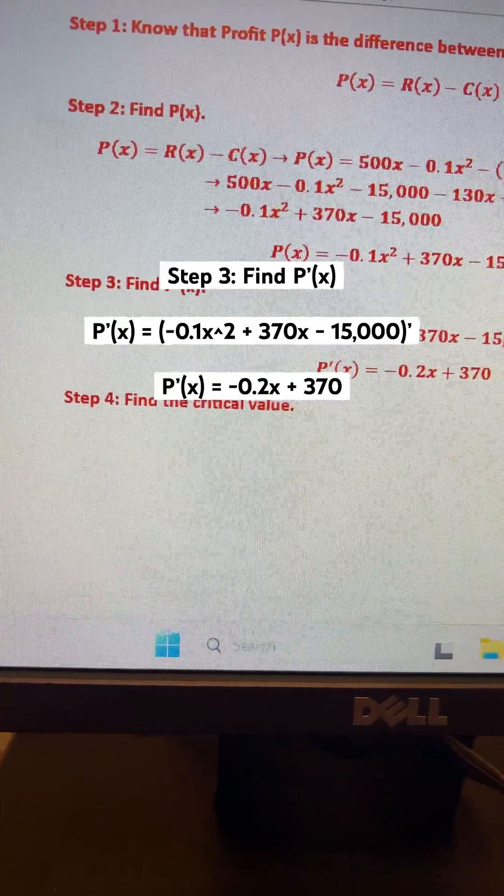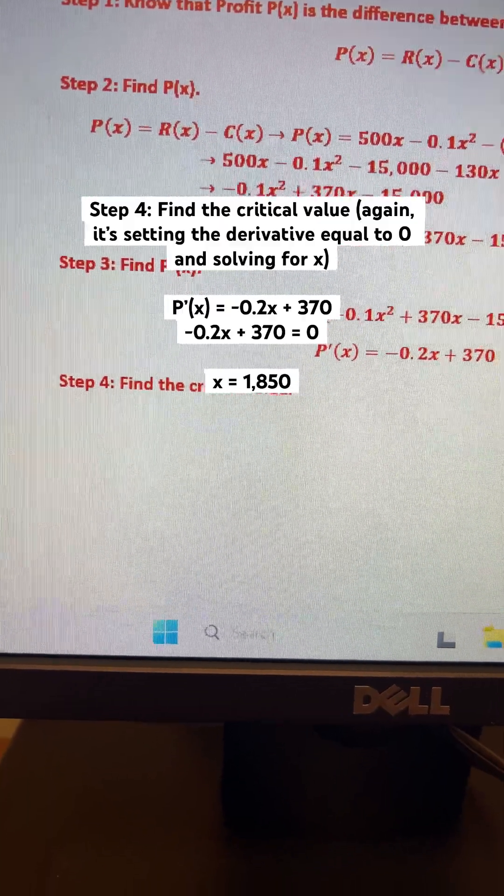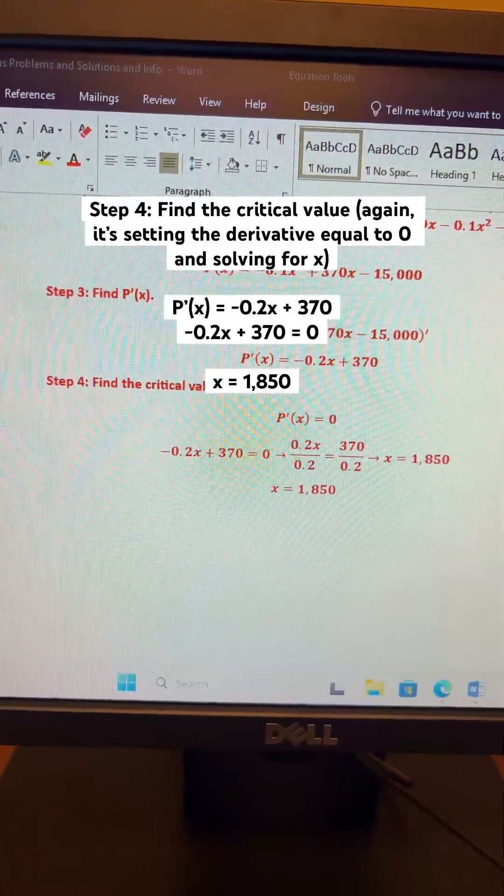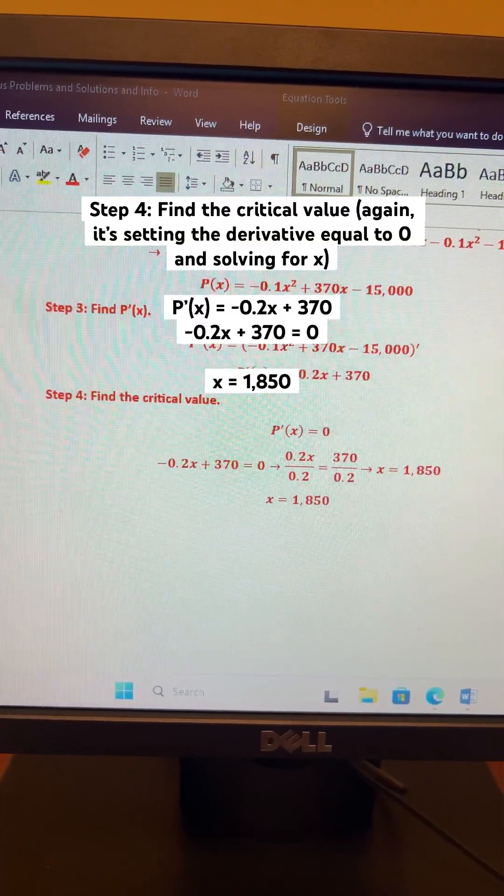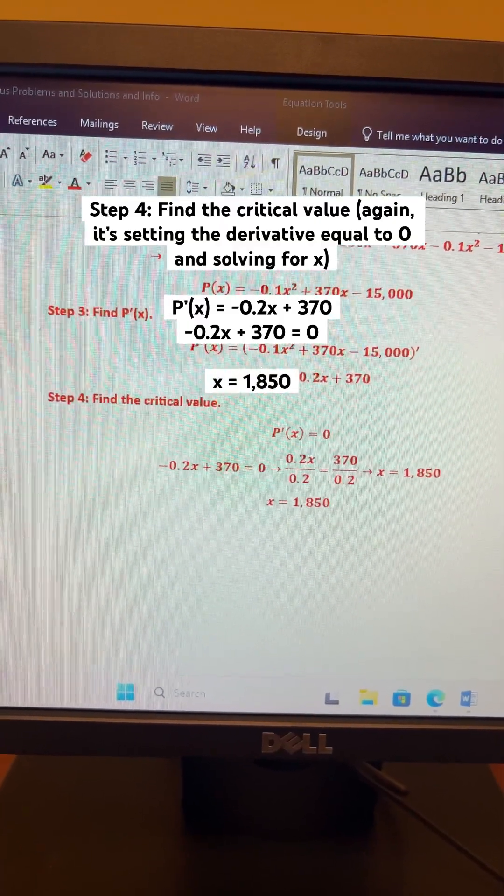Alright, now step 4 is to find a critical value. You should know how it works. With critical values, you're setting the derivative equal to 0 and solving for x. So x is 1850.